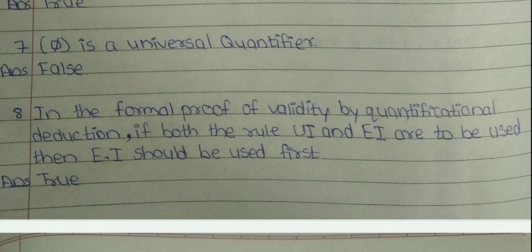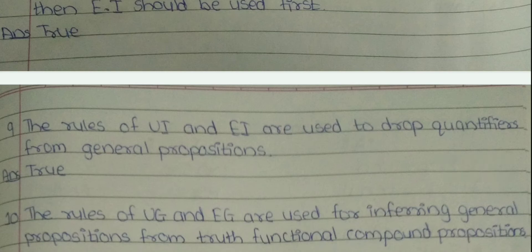8. In the formal proof of validity by quantification deduction, if both the rules UI and EI are to be used, then EI should be used first. The answer is true. 9. The rules of UI and EI are used to drop quantifiers from general propositions. The answer is true.